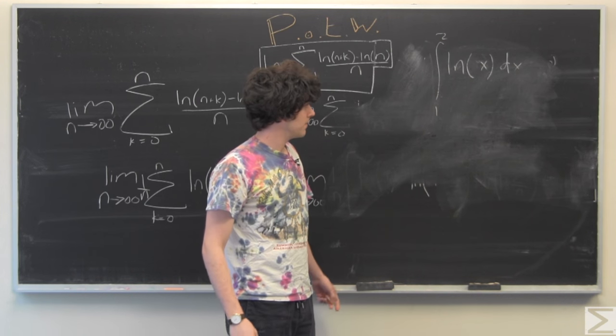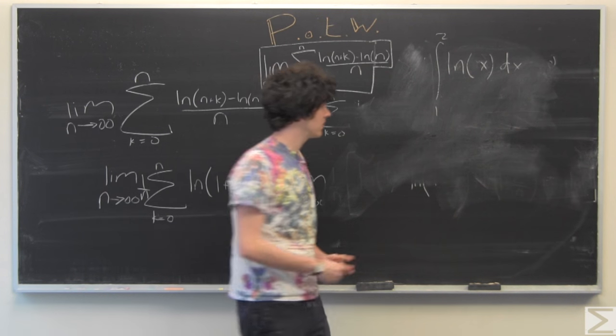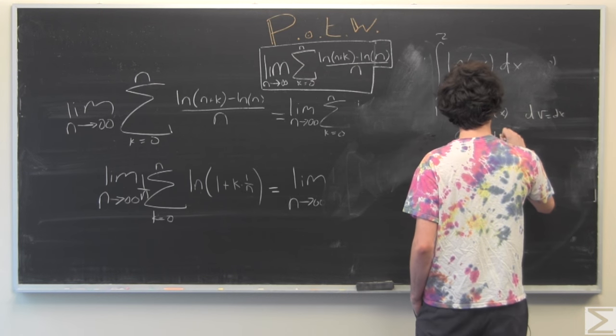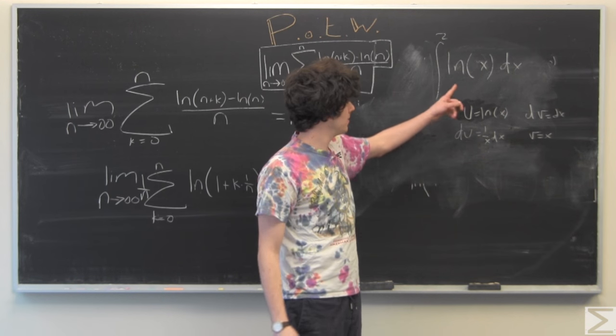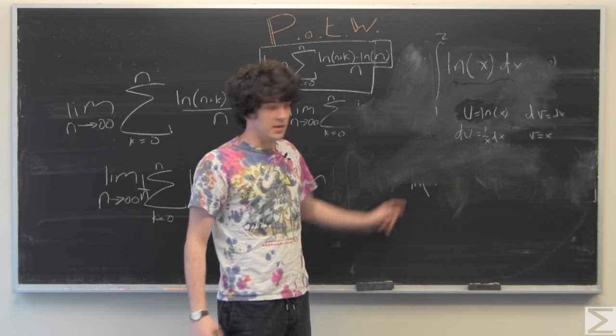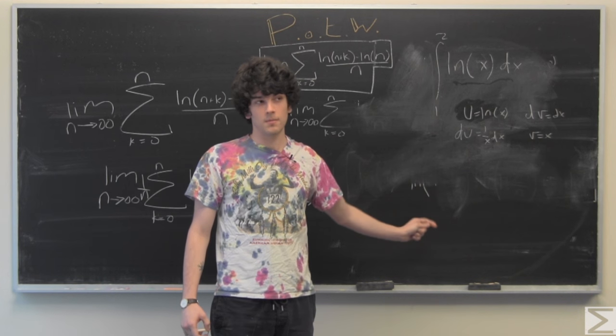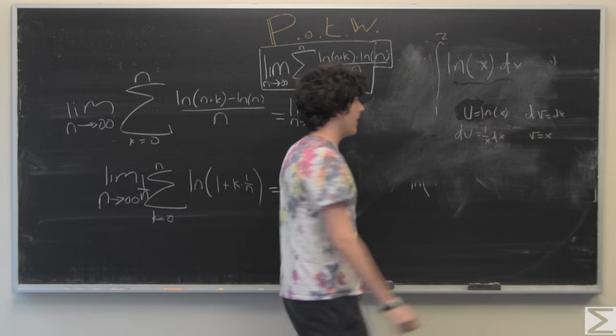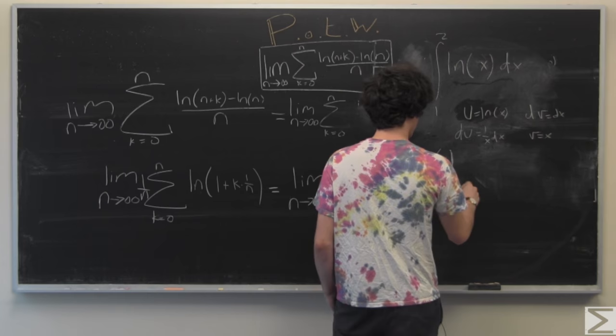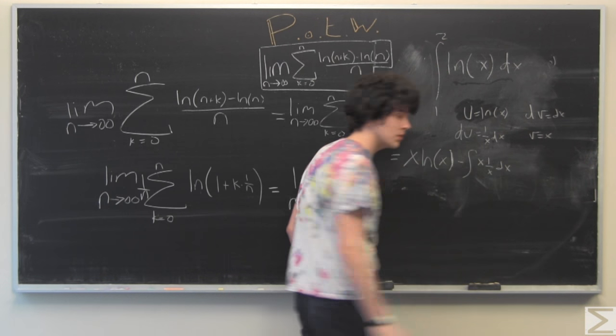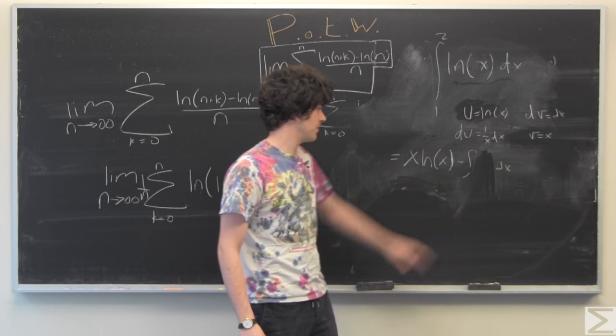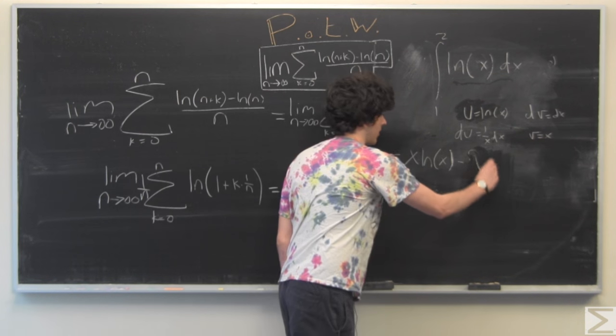So now we have the integral of u dv. And if you recall, the integral of u dv is equal to uv minus the integral of v du. So we'll write that out. And this becomes 1 dx, and that of course becomes x.